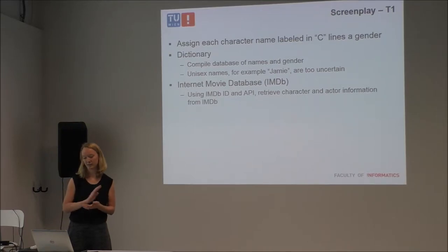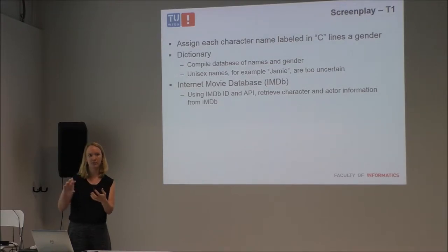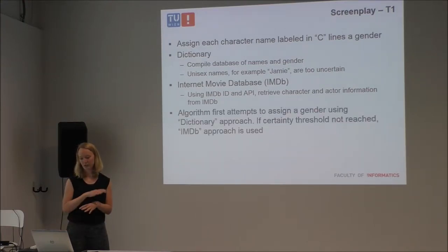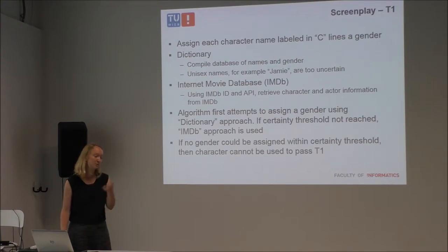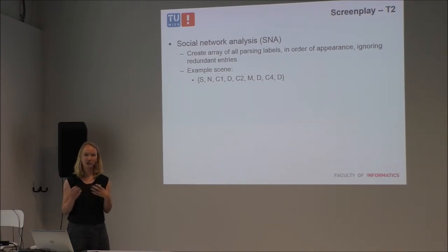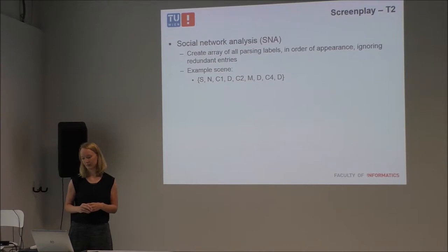Therefore we connected the data of the film to the IMDB database. We only have to match the name of the screenplay character to the name in the IMDB credits, and we use the gender of the actor to determine the gender of the character — all of this information is available there. The algorithm first tries to decide gender based on the dictionary approach, and if it's too uncertain, then we use the IMDB approach. If the IMDB lookup is also too uncertain, then we can't assign a gender to that character.